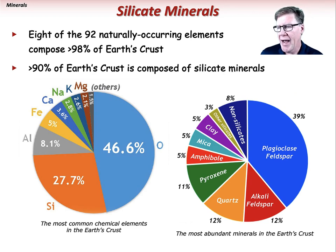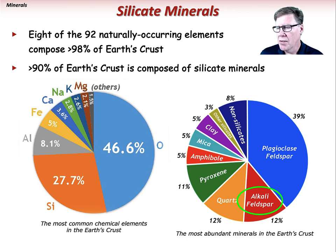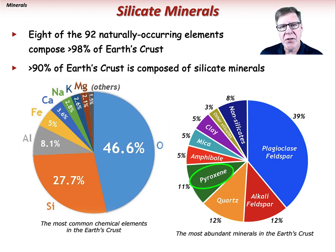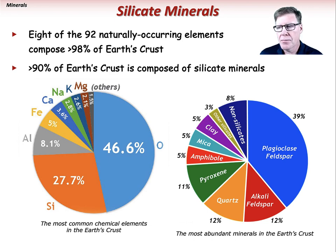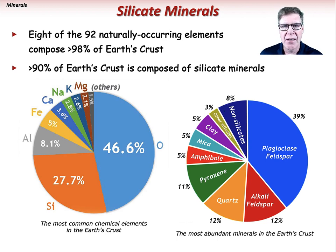Feldspars are about half of these minerals and include plagioclase feldspar at 39% and alkali feldspar at 12%. Quartz is also abundant at 12%, followed by pyroxene, then amphibole, mica, the clay minerals, and other silicates. The non-silicates — sulfides, sulfates, halides, etc. — make up the last 8%.